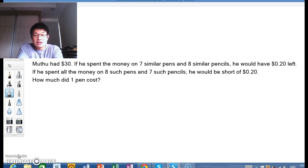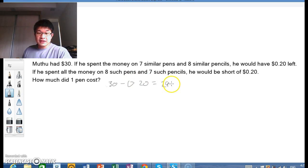Mutu had $30. If he spent the money on 7 similar pens and 8 similar pencils, he would have $0.20 left. So if you look at the first sentence, that would simply mean that we can take $30 minus $0.20 left, so that will be $29.80.